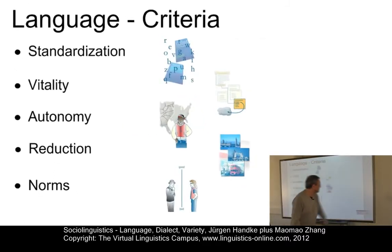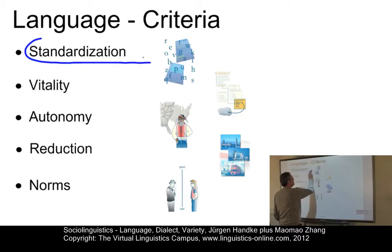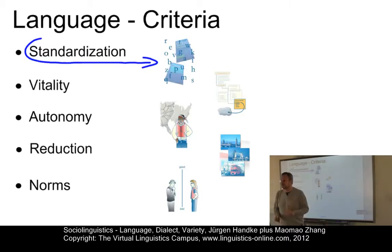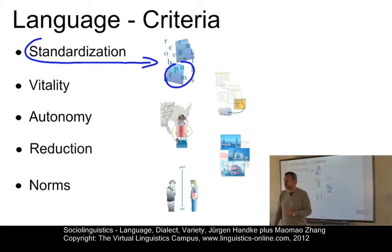So what sort of criteria can we use? The first one is standardization. Languages involve a certain degree of standardization — that is, the development of a grammar. Here we have grammar books in present-day English, spelling rules, dictionaries, and in many cases even literature.